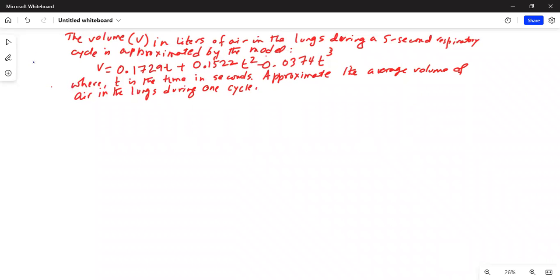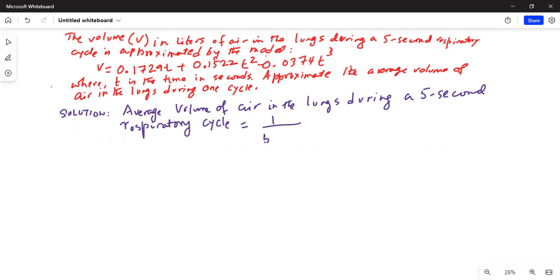So let's write the solution. Average volume of air in the lungs during a five second respiratory cycle is equal to one divided by five minus zero. This is the time period. And the integration is from zero to five of the volume.